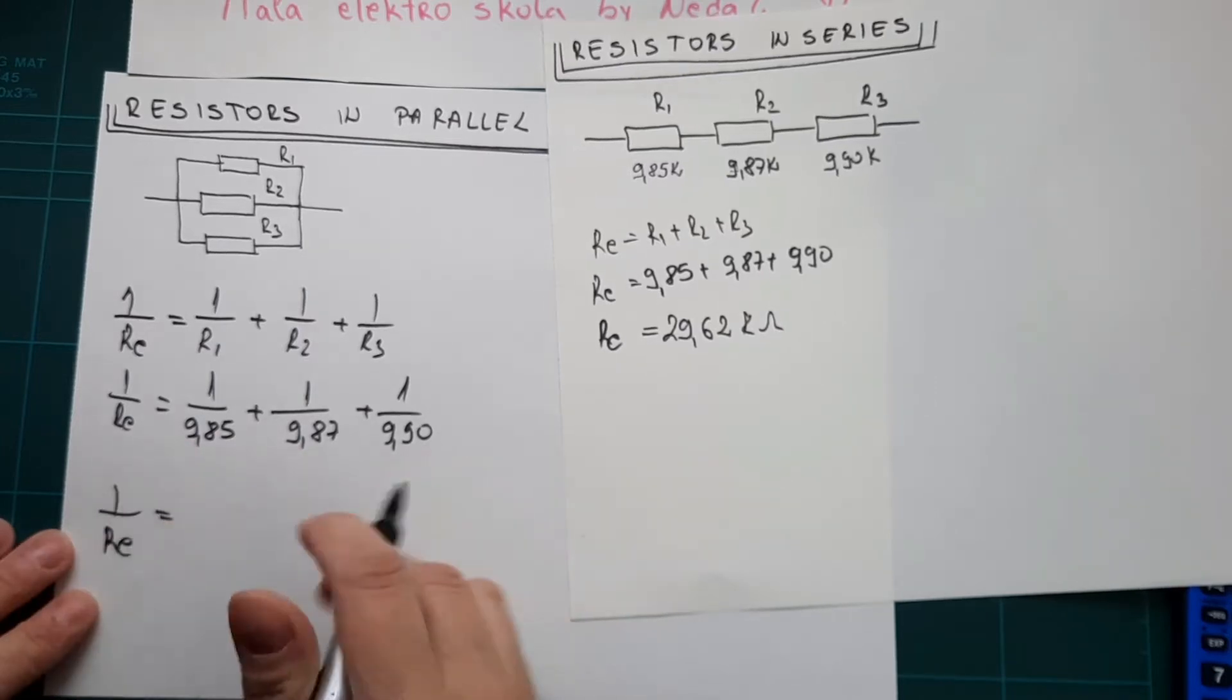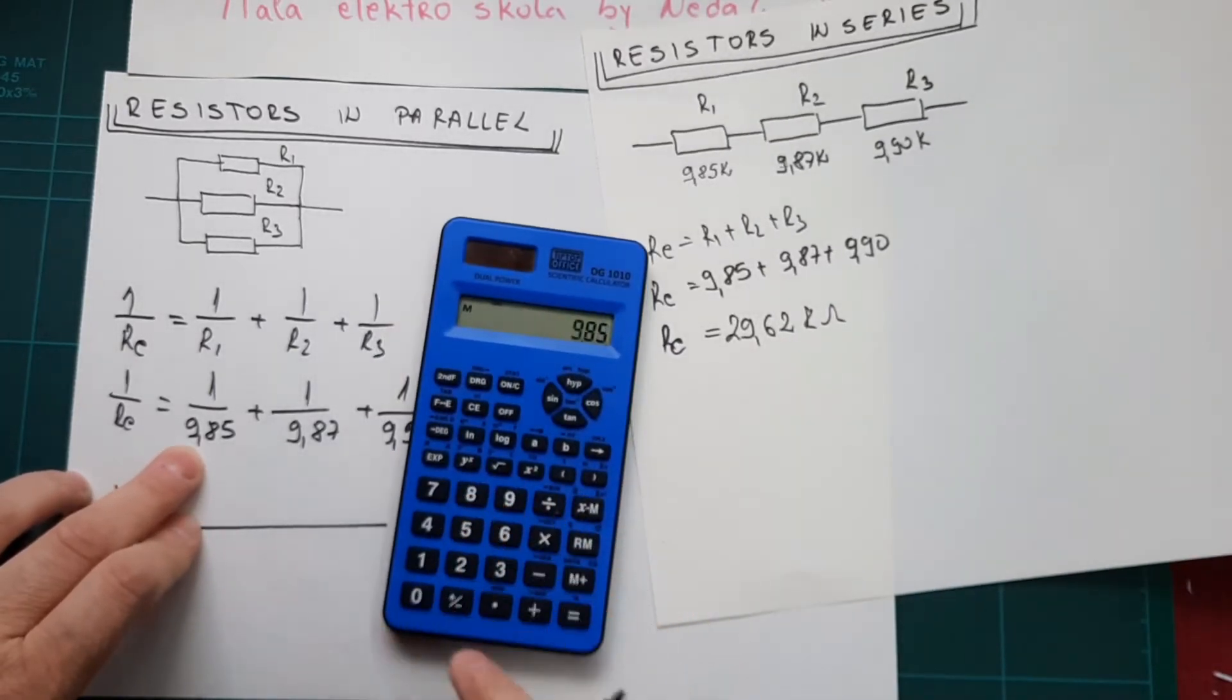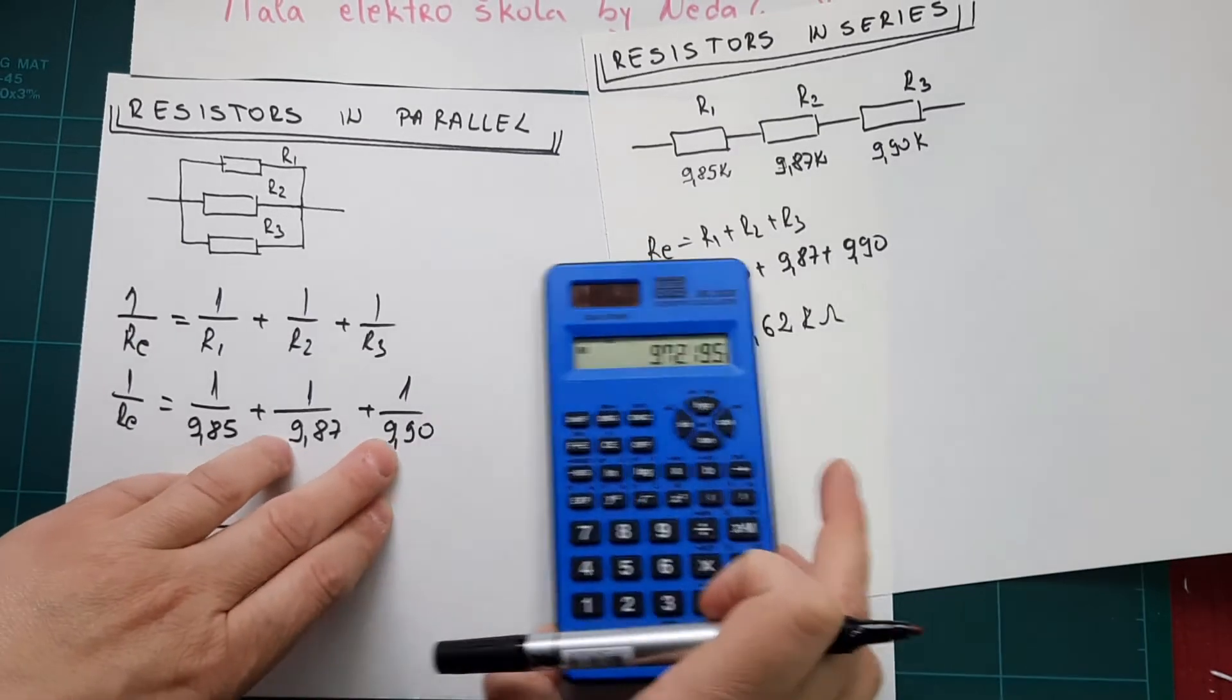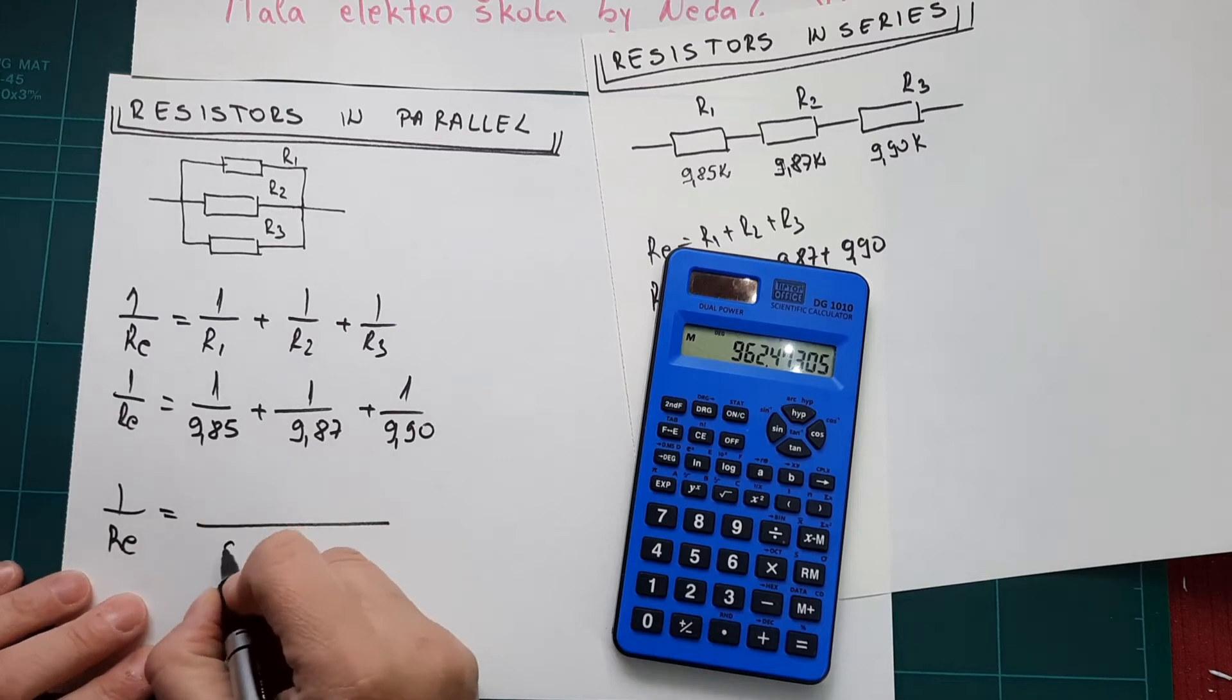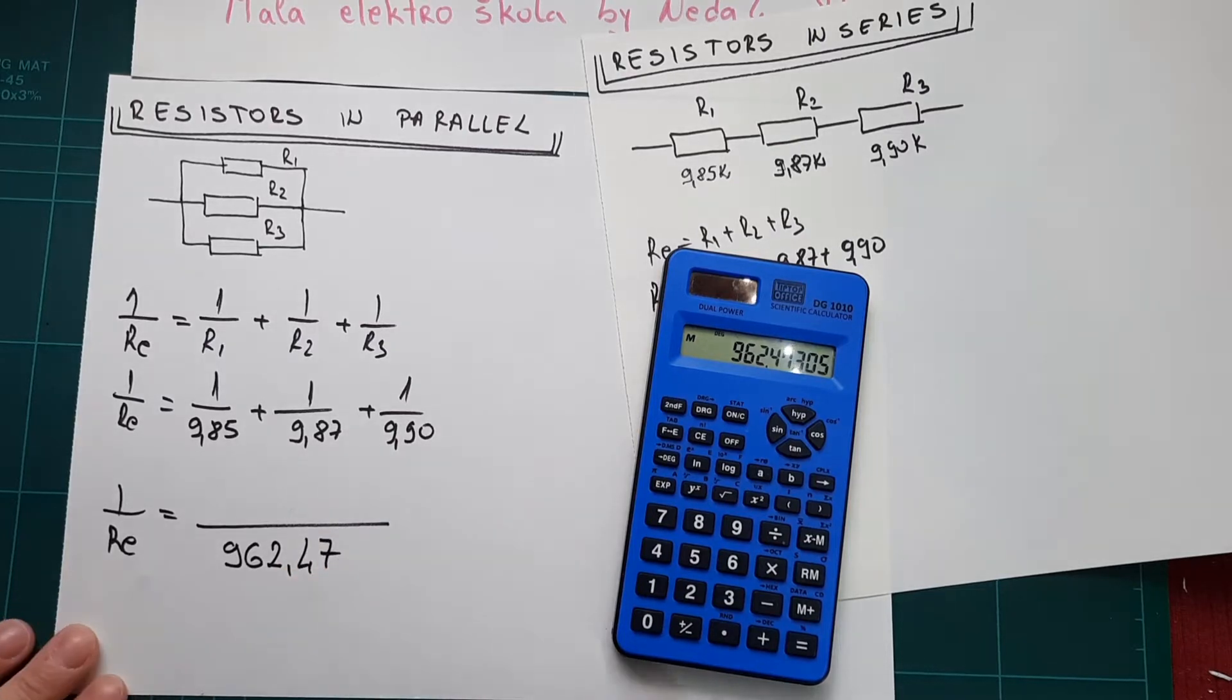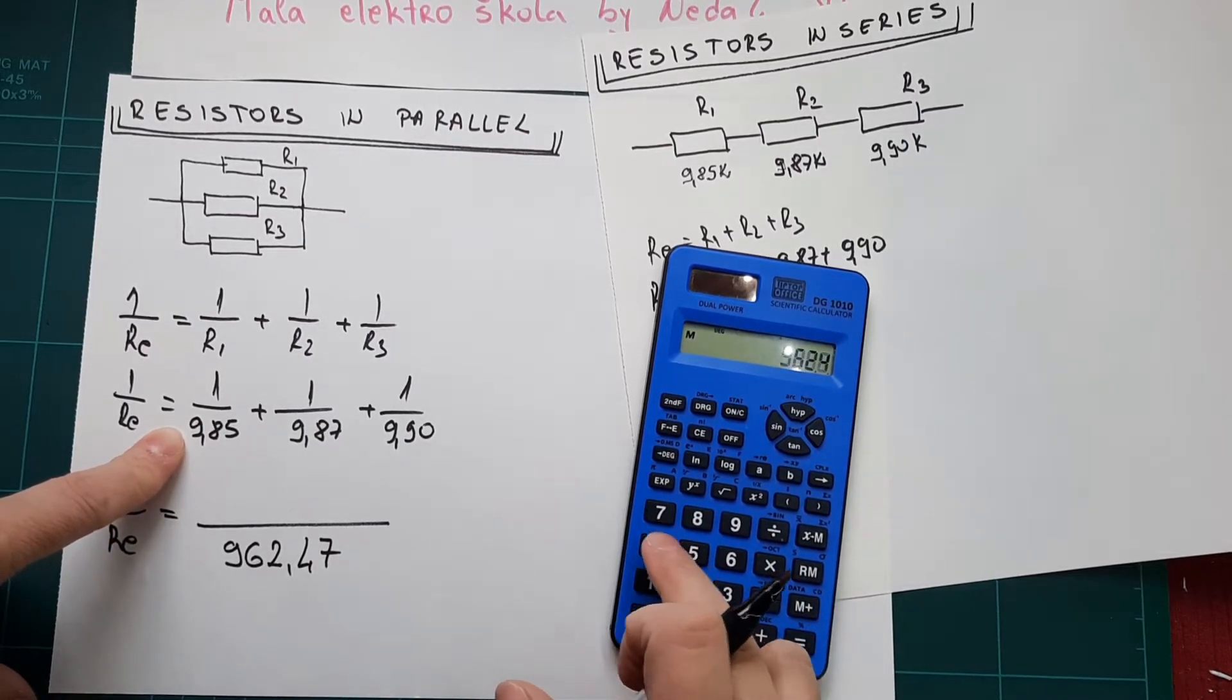Since we have all these different values, we have to multiply all three. So 9.85 multiplied with 9.87 multiplied with 9.9. We got 962.47.